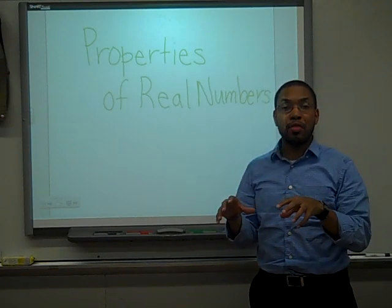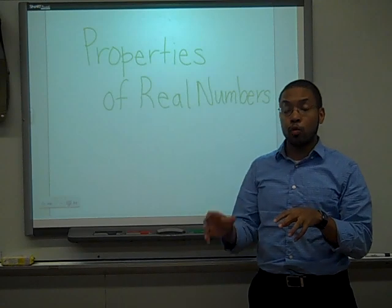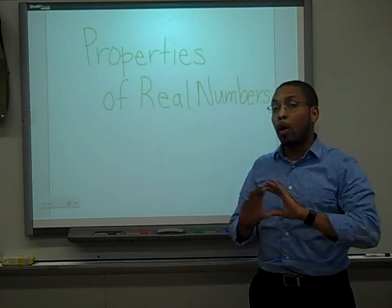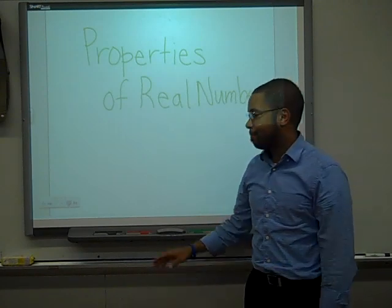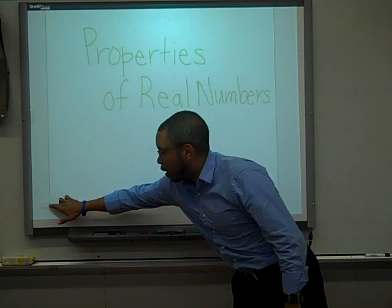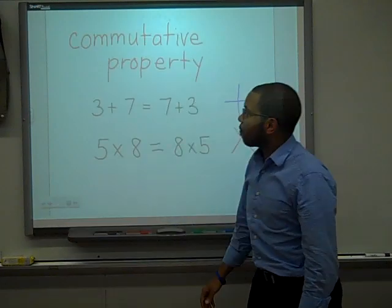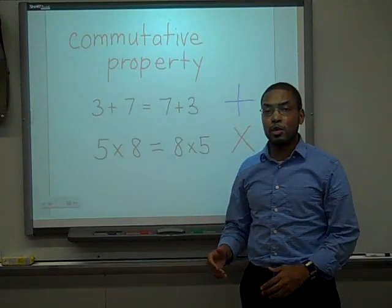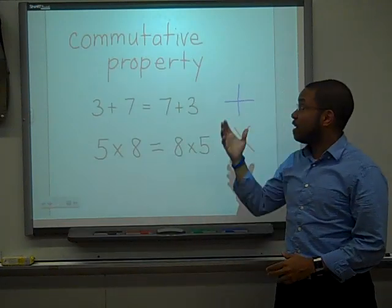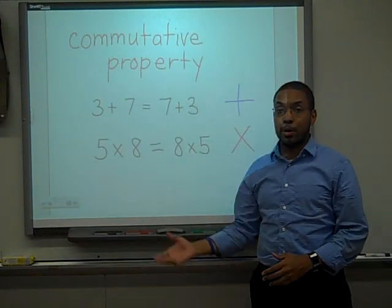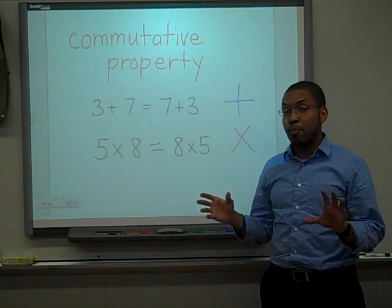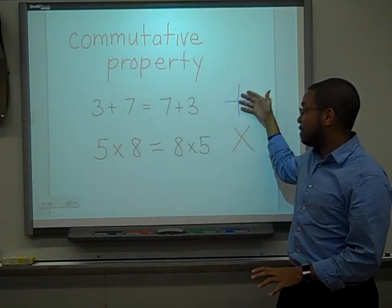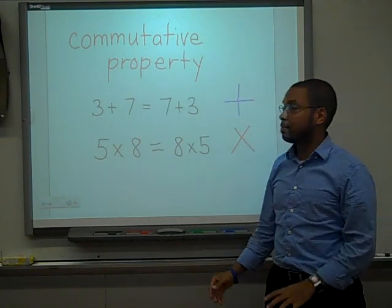A property in mathematics is a rule — it's a characteristic that will always be true. The first property I want to talk to you about is the commutative property. The commutative property applies to both addition and multiplication.